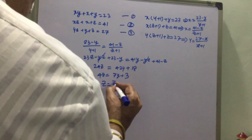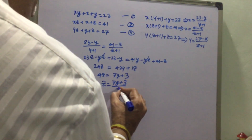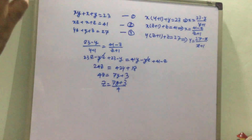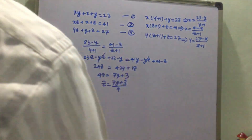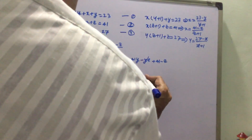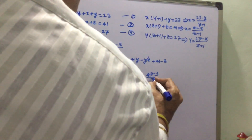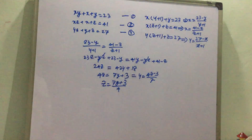So z = (7y + 3) / 4, or equivalently y = (4z - 3) / 7. Now we substitute this into the expression y = (27 - z) / (z + 1), giving (4z - 3) / 7 = (27 - z) / (z + 1).